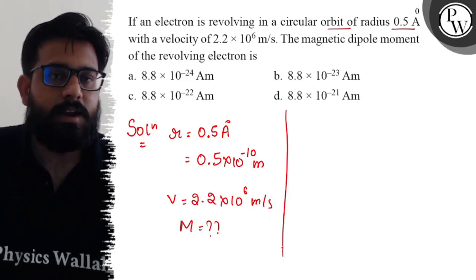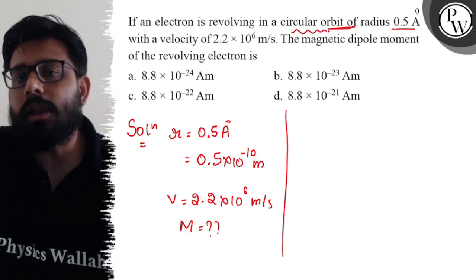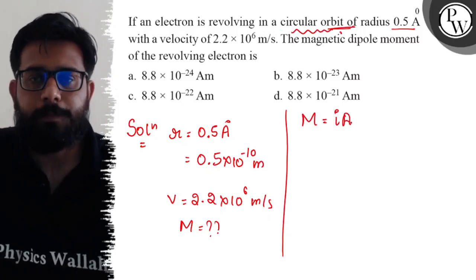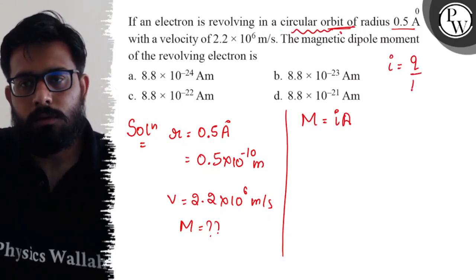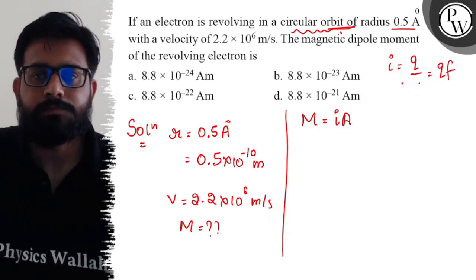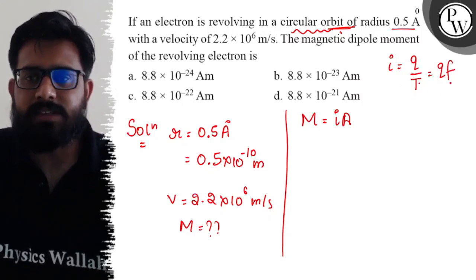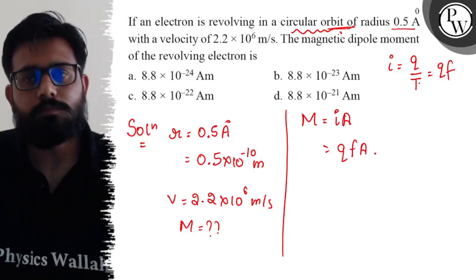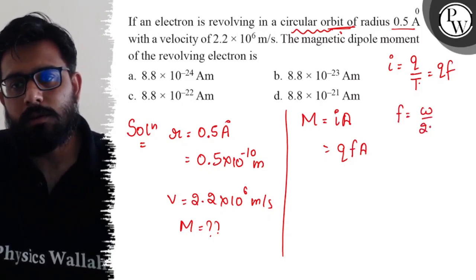Since the electron is revolving in a circular orbit, the magnetic moment can be written as M = I × A. Here, I equals Q divided by T, which can be written as Q times frequency. Since frequency equals ω divided by 2π, we get I = Q × ω / 2π.